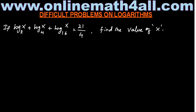We are going to see how to solve some difficult problems on logarithms. We have a problem on the board: if log X to the base 2 plus log X to the base 4 plus log X to the base 16 is equal to 21 over 4, find the value of X. The information given is simple and the target is very clear.